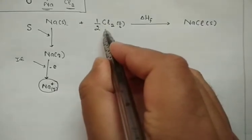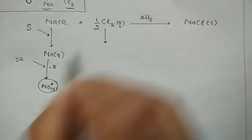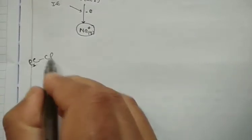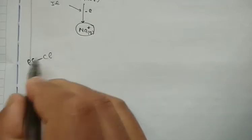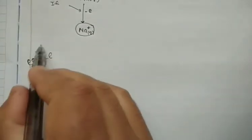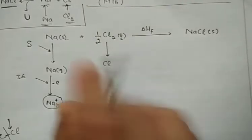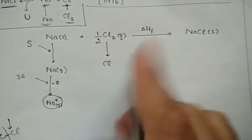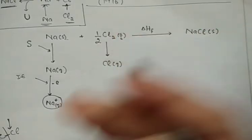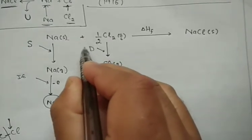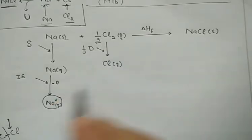Now for Cl₂: we have to convert it into atomic form. The bond between the two chlorine atoms is a covalent bond, and it must be broken to get atomic chlorine. To break this bond, energy is required — that is called the dissociation energy. Since we are using half a mole of Cl₂, we write it as ½D. Now we have atomic chlorine available.